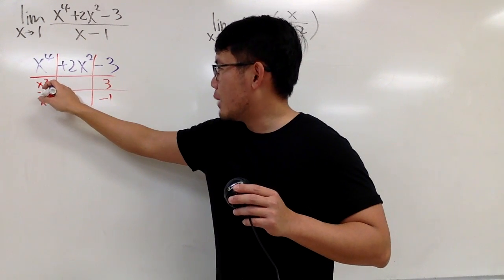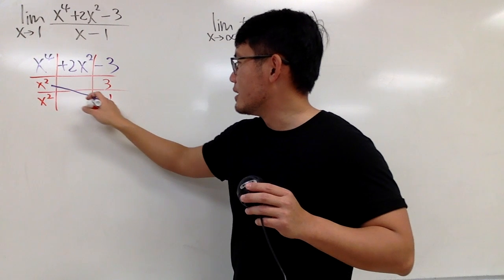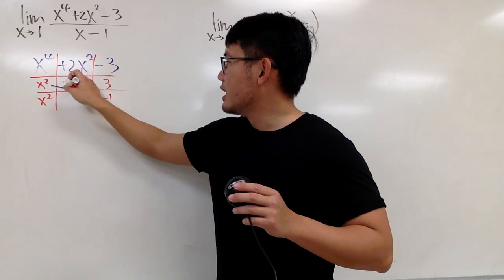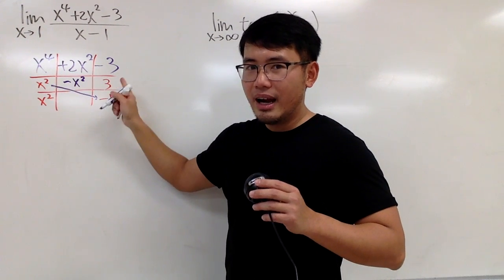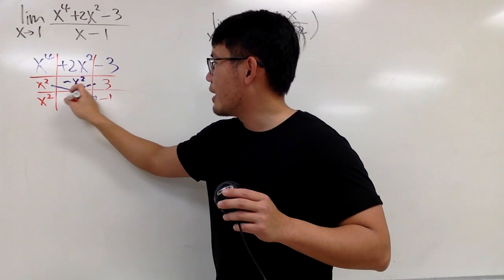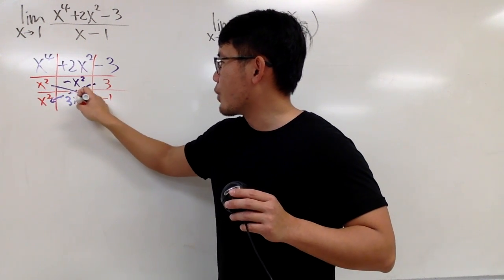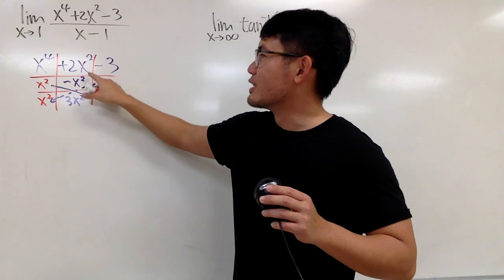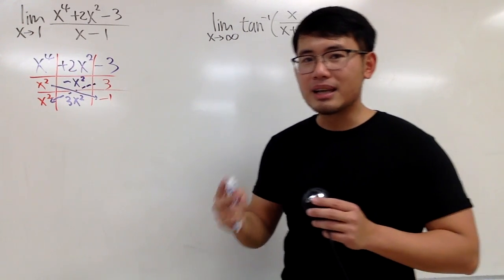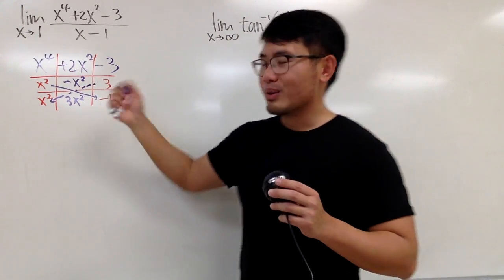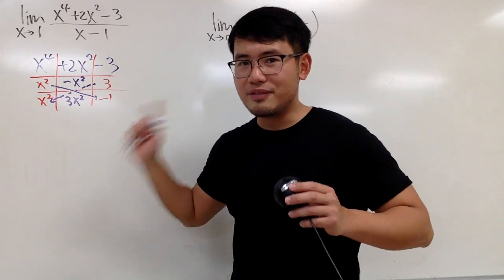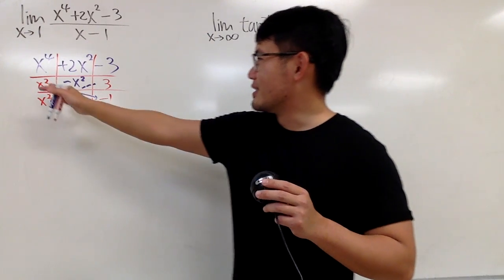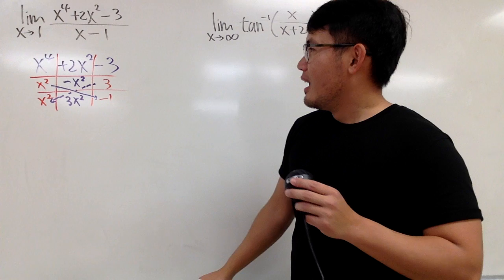But if you do this right here, let me show you. This is called the tic-tac-toe factoring. What times what will give you x to fourth power? Of course, we can use x squared and x squared. And what times what will give you negative 3? Well, I will be using positive 3 and negative 1.